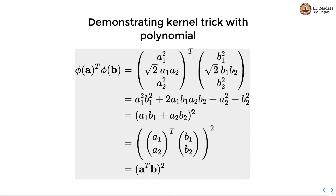We can rewrite this as (a1 b1 + a2 b2) whole squared, which can be written in dot product format as (a1, a2) transpose times (b1, b2). This is a vector-vector multiplication form, equivalent to the dot product between a and b raised to the power of 2. So what is happening here is: we are performing the dot product in the original feature space and then applying the square transformation on the dot product in order to get the dot product between the two feature vectors in the transform space.